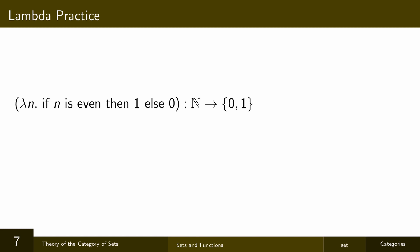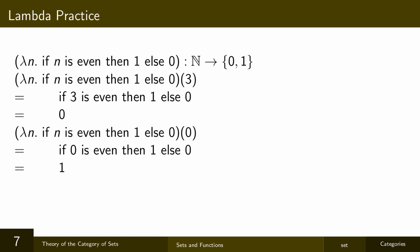And here's a construction we'll use sometimes, conditionals. In this example, we define a function which takes a natural number n, and if n is even returns 1, and otherwise returns 0. So 3, for example, is not even, so applying this function to 3 yields 0. 0 is even, so applying this function to 0 returns 1.